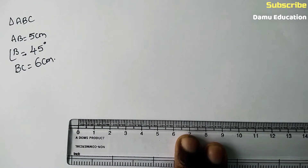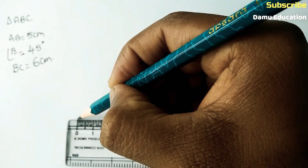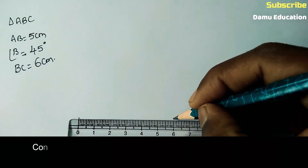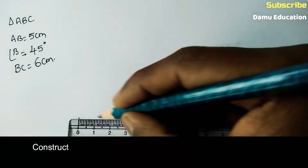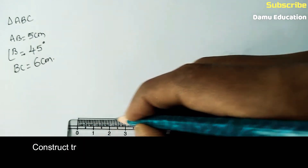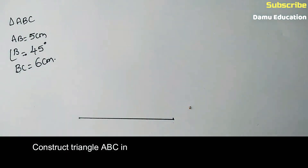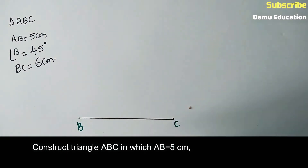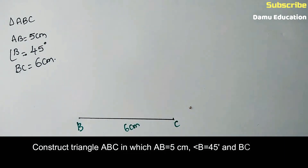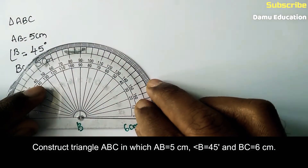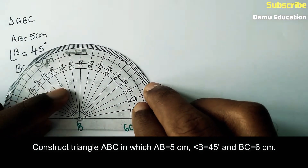Keep your scale horizontally and make sure it is perfect. BC is 6 centimeters, so draw the line segment with 6 centimeters. BC equals 6 centimeters.